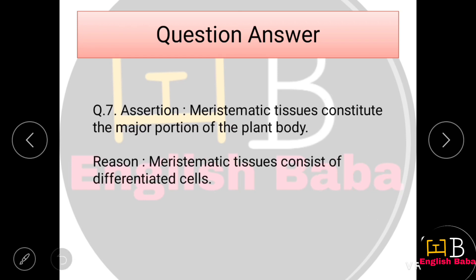Assertion-Reason Question 7. Assertion: Meristematic tissues constitute the major portion of the plant body — this is false. Reason: Meristematic tissue consists of differentiated cells — this is also false. Both assertion and reason are wrong. So Option D is correct.